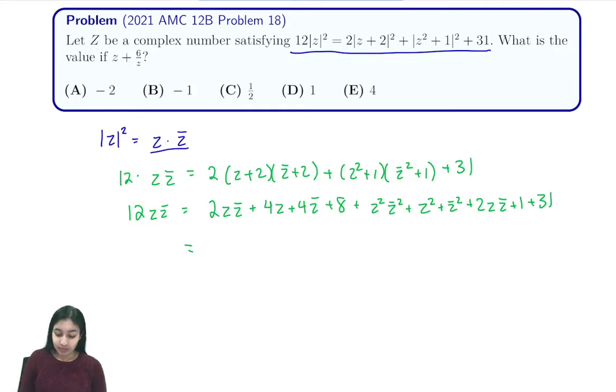So now we can simplify this further and write it as 4 times (z plus z bar) plus (z z bar) squared plus (z plus z bar) squared plus (z z bar) plus 40, which we get from combining these terms.